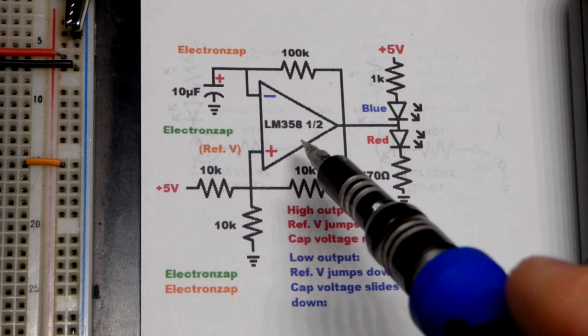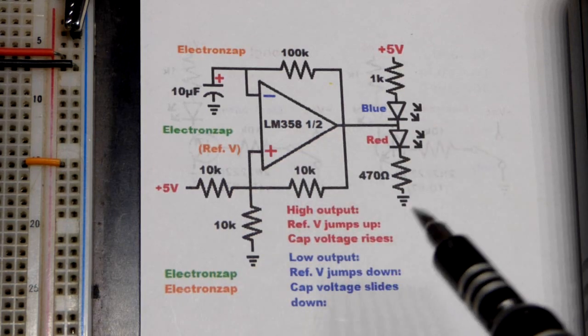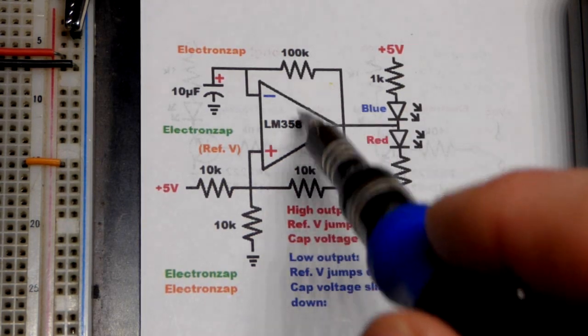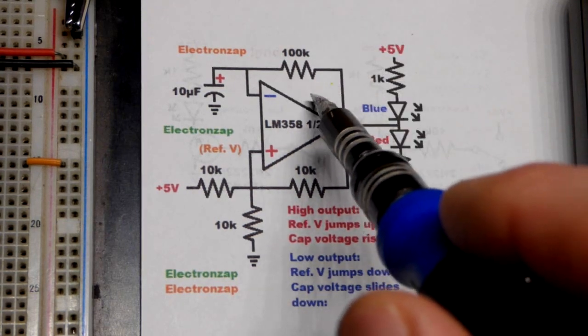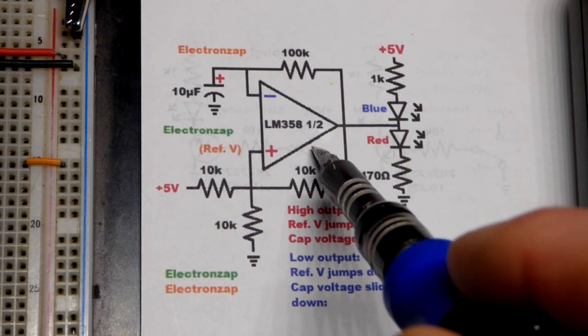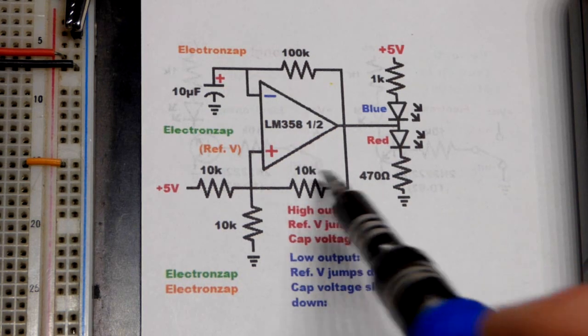Now zooming in on the schematic here that I drew, I didn't include the power pins. Sometimes you see them, sometimes you don't. But we have this connected to the positive supply of 5 volts and a negative supply of 0 volts down there.